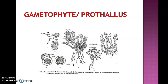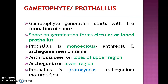After maturity, spores get released from the sporangium. After reaching the soil, the spore germinates, resulting in production of gametophyte or prothallus. Gametophyte generation starts with the formation of spores. The prothallus of Equisetum is independent and is a highly lobed structure with the upper region highly lobed. It is monoecious — both antheridia and archegonia are present on the same prothallus. Antheridia are seen on the lobes of the upper region, while archegonia are seen at the lower region. The prothallus is protogynous, meaning archegonia mature before antheridia.